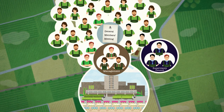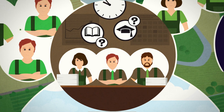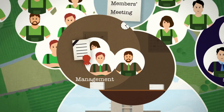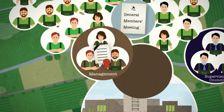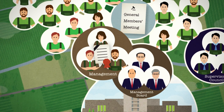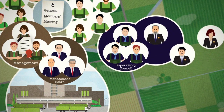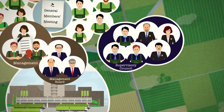Over time, the daily management of the business became a full-time job requiring a lot of knowledge and skills. The elected board of members retained statutory responsibility, but appointed a full-time management board consisting of non-growers. The supervisory council was expanded to include external board members who were not growers, and subsequently it became the supervisory board.